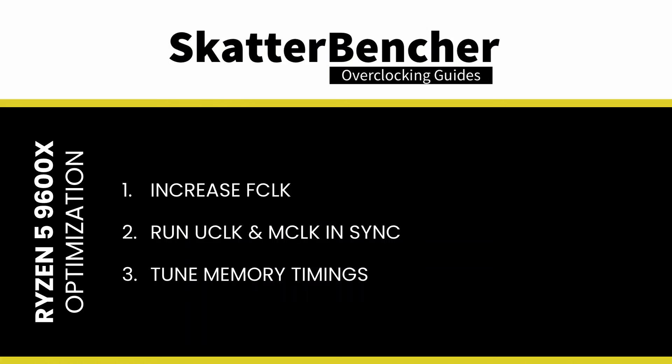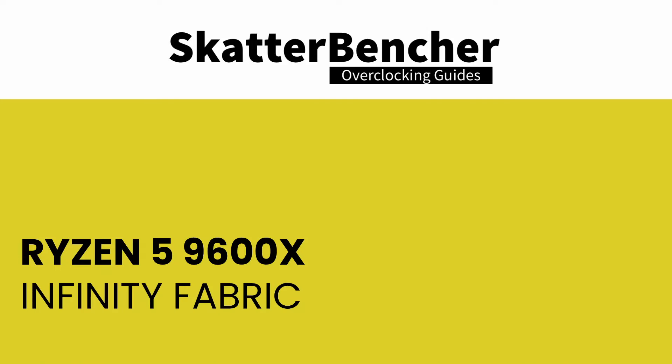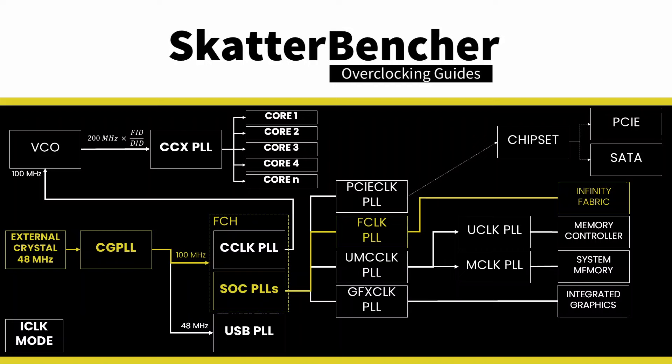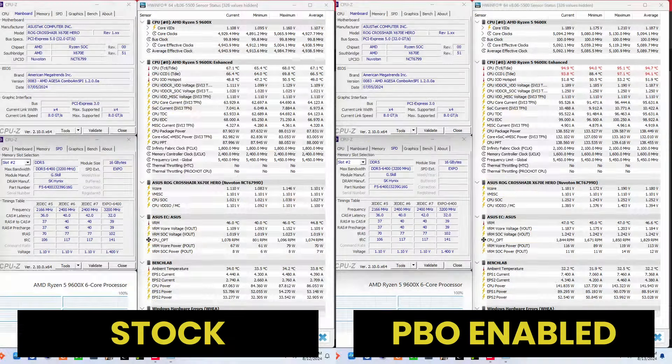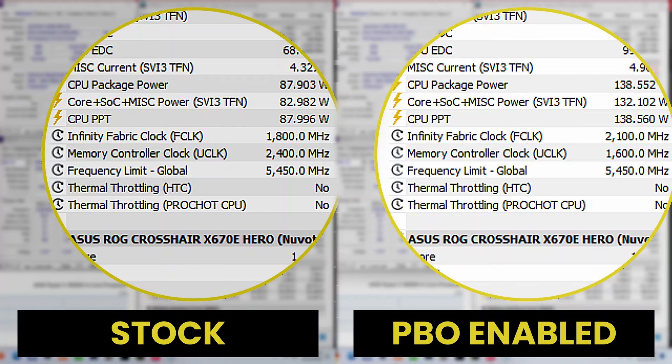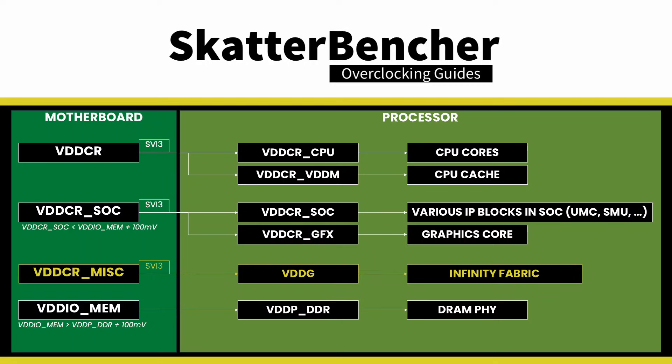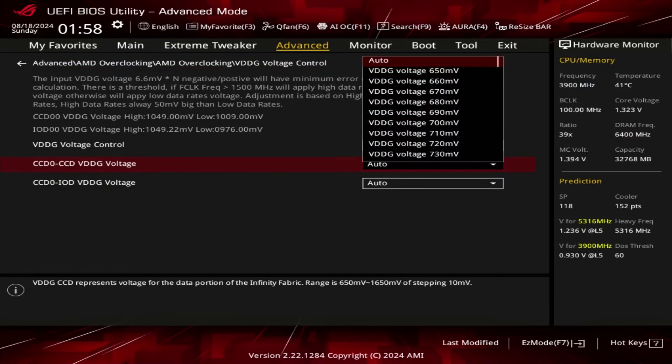There were three things I wanted to address with the memory subsystem. The fabric frequency, or F-clock, is generated by the SOC PLL derived from a 100 MHz reference clock input, multiplied by the F-clock ratio configurable in the BIOS. The standard operating frequency of the Infinity Fabric is 1,800 MHz, but with PBO enabled many boards run it at 2,100 MHz. I was able to increase it to 2,200 MHz, but anything above that basically didn't boot, even with voltage adjustments. The Infinity Fabric voltage is provided by the VDDG voltage supply, derived by an integrated voltage regulator from the VDDCR miscellaneous voltage rail. There are two VDDG voltage rails available for manual adjustment.